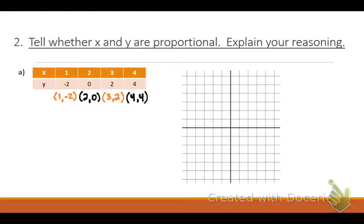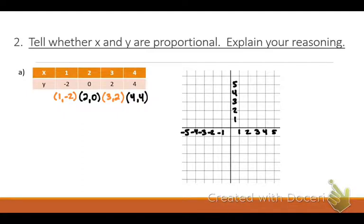Before we get started, let's label our graph. Going to the right is positive — and please label the lines, do not label the boxes. Going to the left is always negative, just like on a number line. Going up is positive; going down is negative. Notice: a lot of people are labeling the very first line as line one, but that's incorrect because you're skipping a whole line. You've got to be careful.